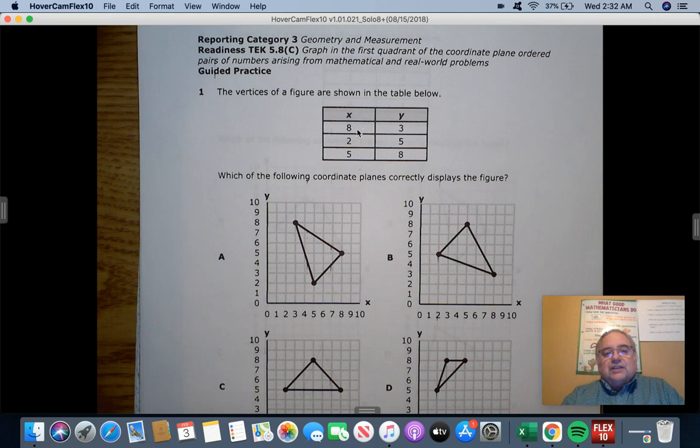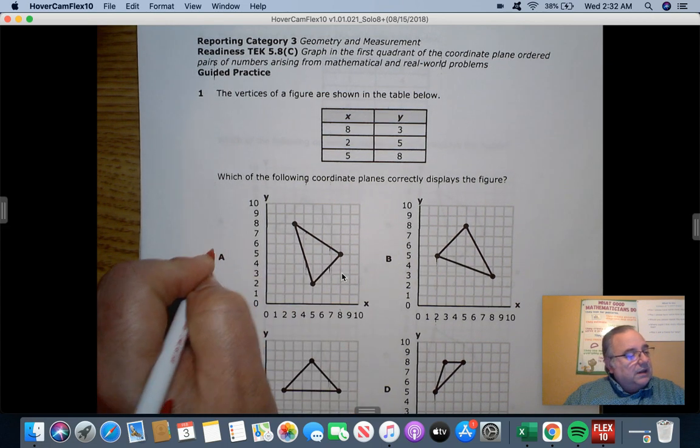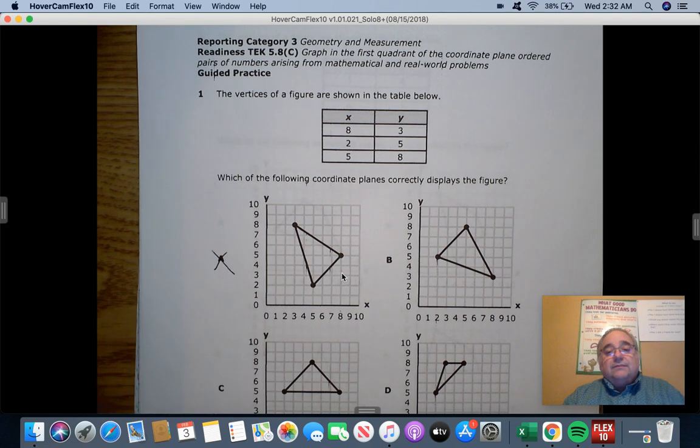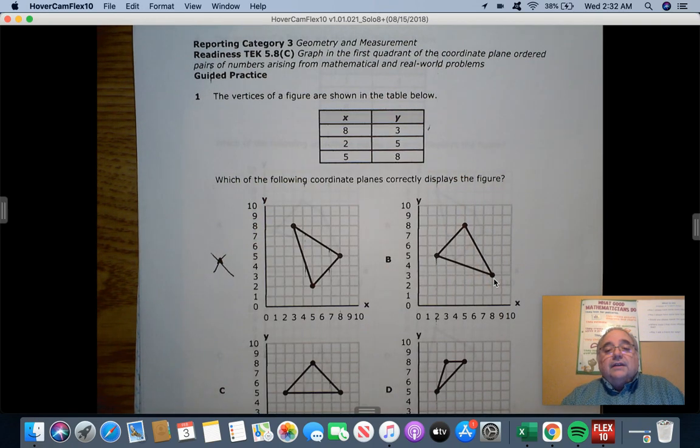So the first X that I look at is 8. So I know I started at the origin, 8, and go up 3. Oh, that one's wrong. So that lets me know that if I don't have 8, 3, that's going to be wrong already. So I can scratch that one out. Let's look at B. I have 8, going 2, 3, 4, 7, 8. And I go up 3. That looks good so far. So that one looks good.